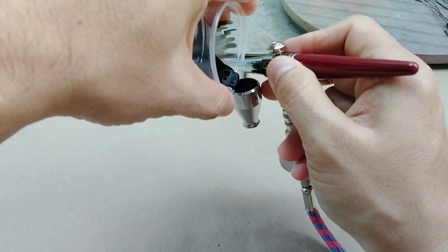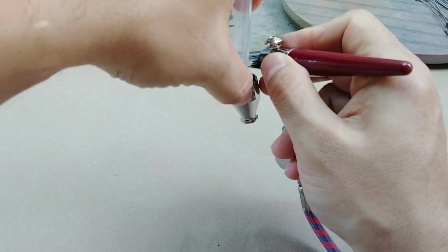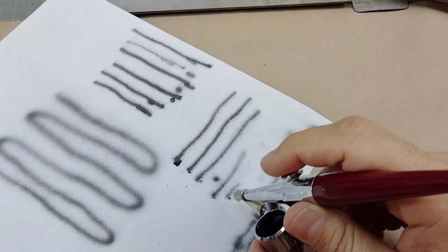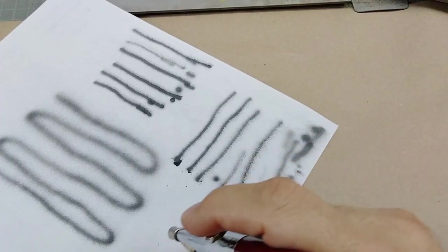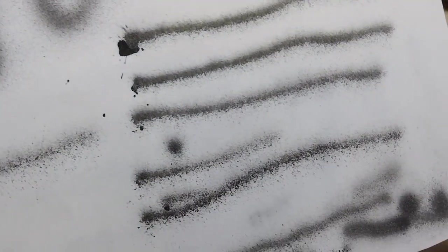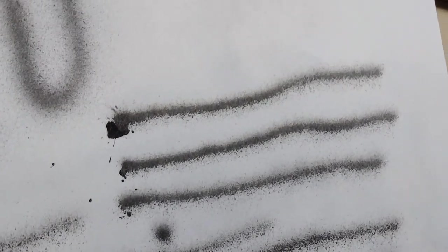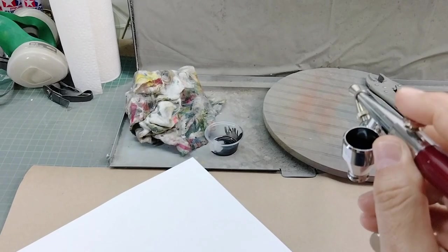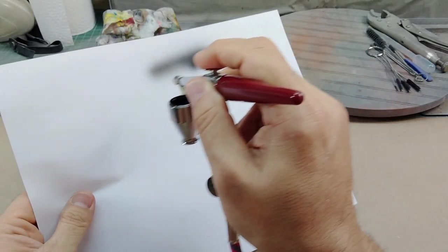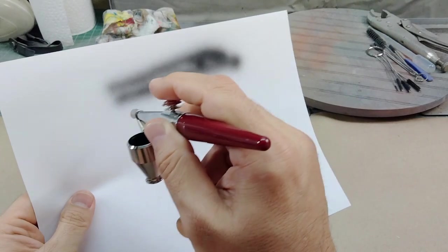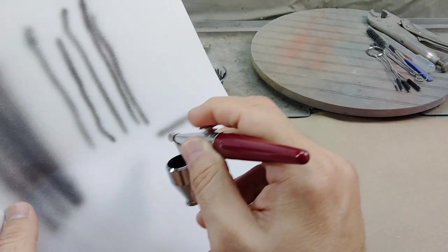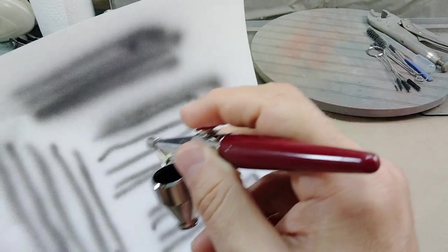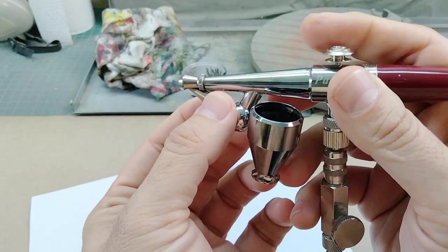Siphon feed airbrushes use air pressure to draw paint up into the nozzle. Because of this, you can only go so low with your pressure before the paint just starts to spit, as there's not enough air to blow that paint out smoothly. Single action means that when pressing down on the trigger, the only thing you're able to control is air pressure. To control paint flow, you can either get closer or further away from your work, and with some models you're able to adjust the nozzle.